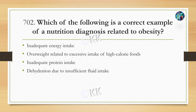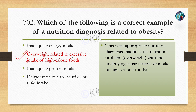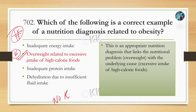Which of the following is a correct example of nutrition diagnosis related to obesity? Option A: inadequate energy intake. Option B: overweight related to excessive intake of high-caloric food. Option C: inadequate protein intake. Option D: dehydration due to insufficient fluid intake. The correct option is B: overweight related to excessive intake of high-caloric foods. This question involves specific knowledge and a language twist — understanding it carefully makes it easy.